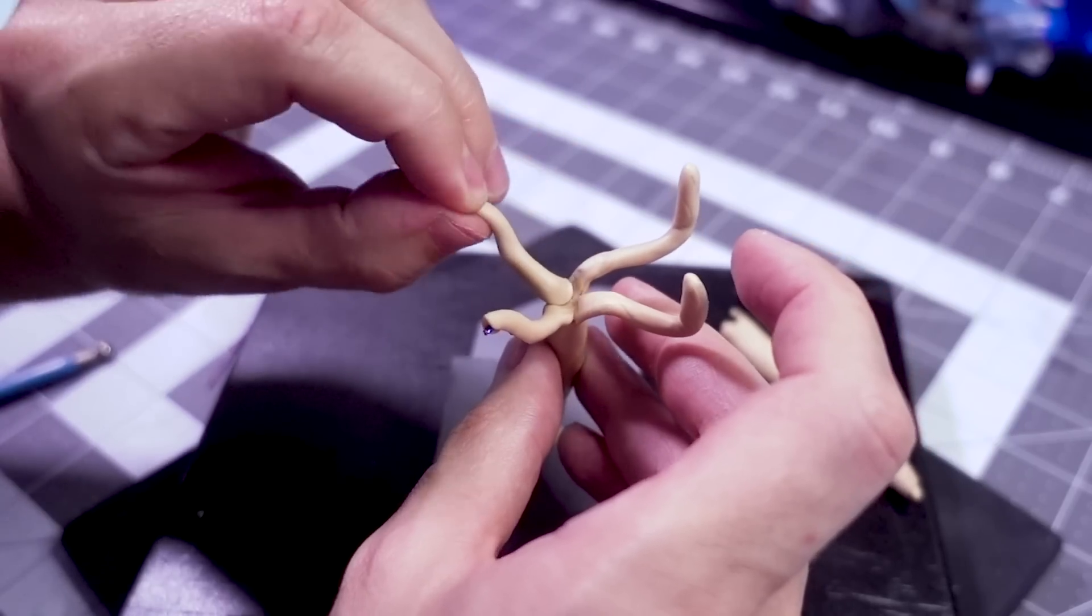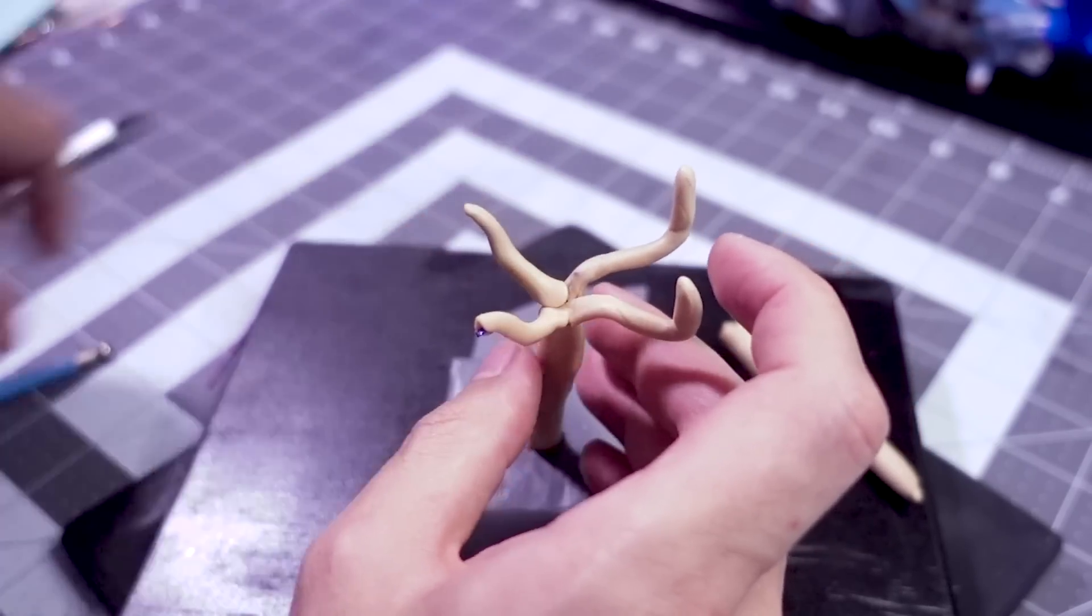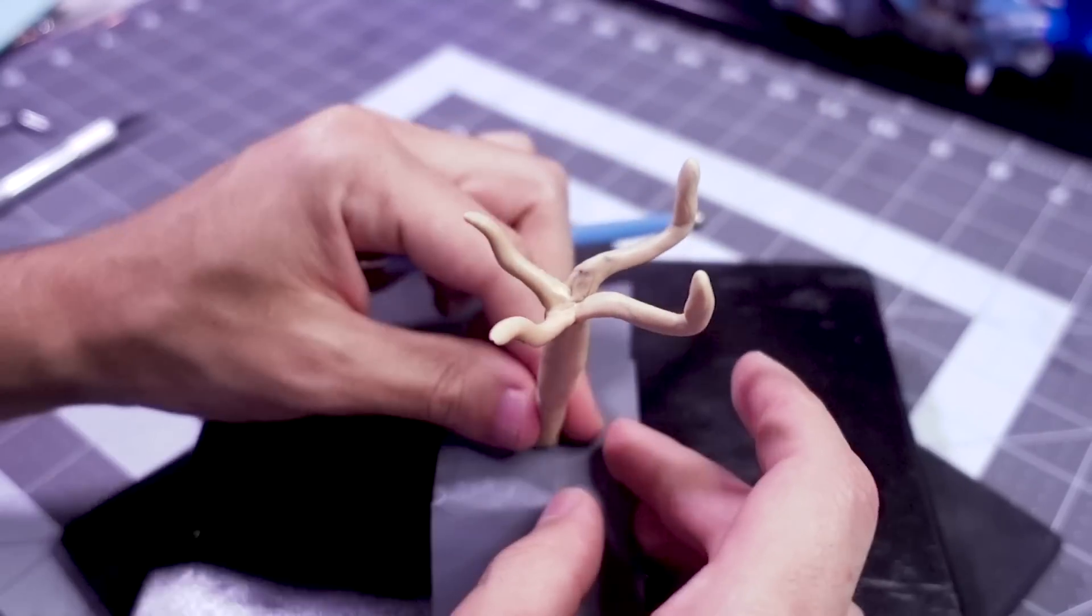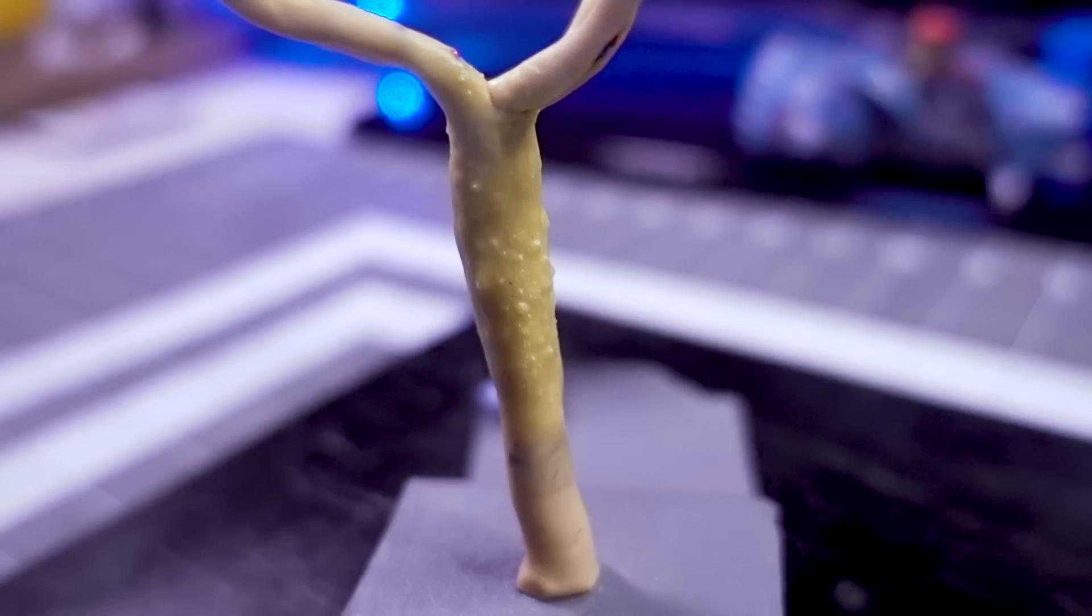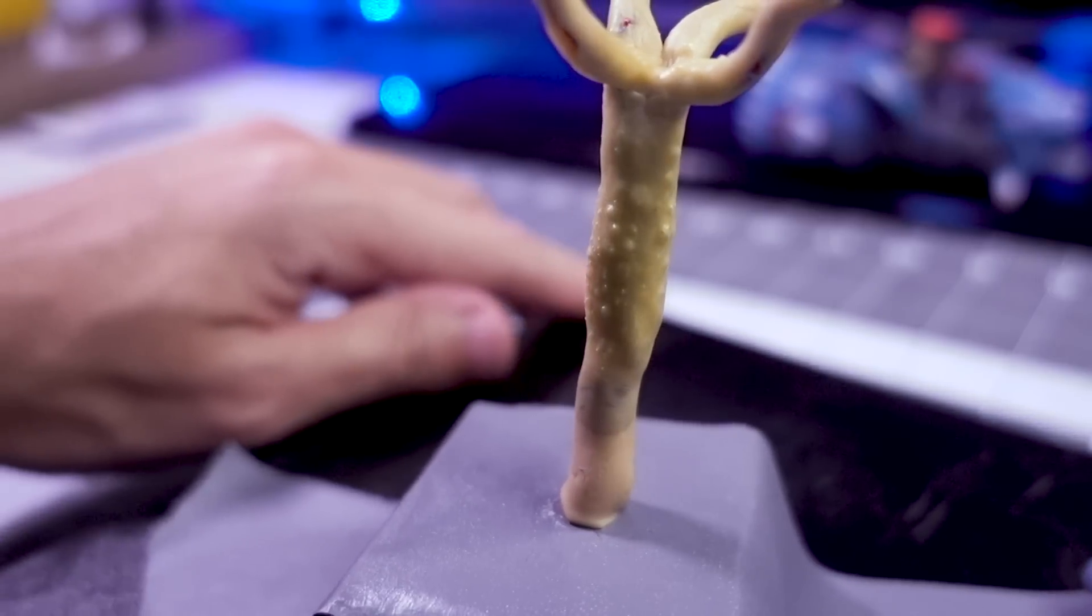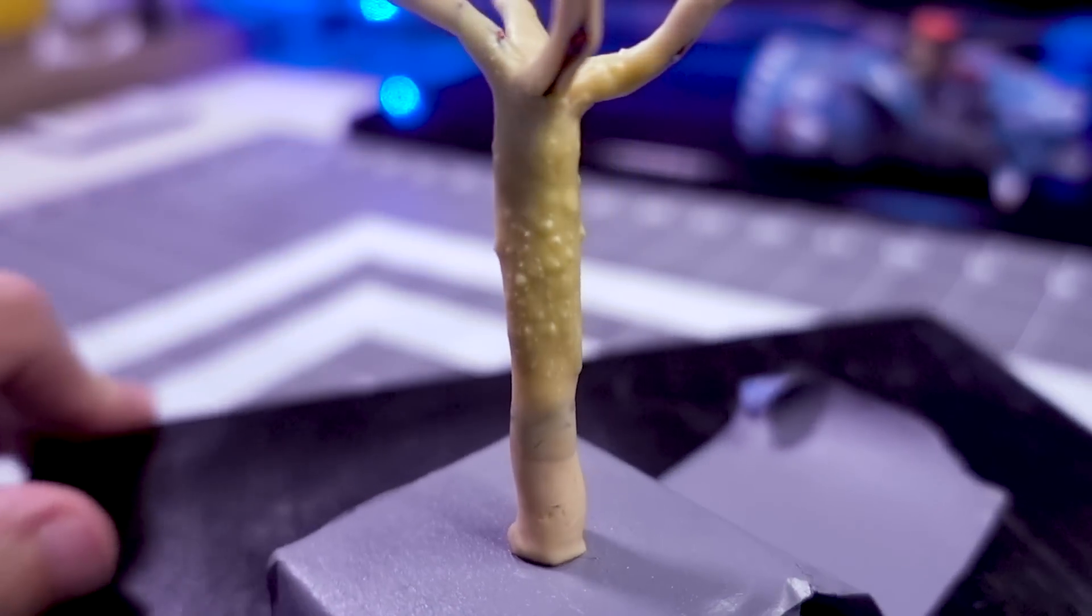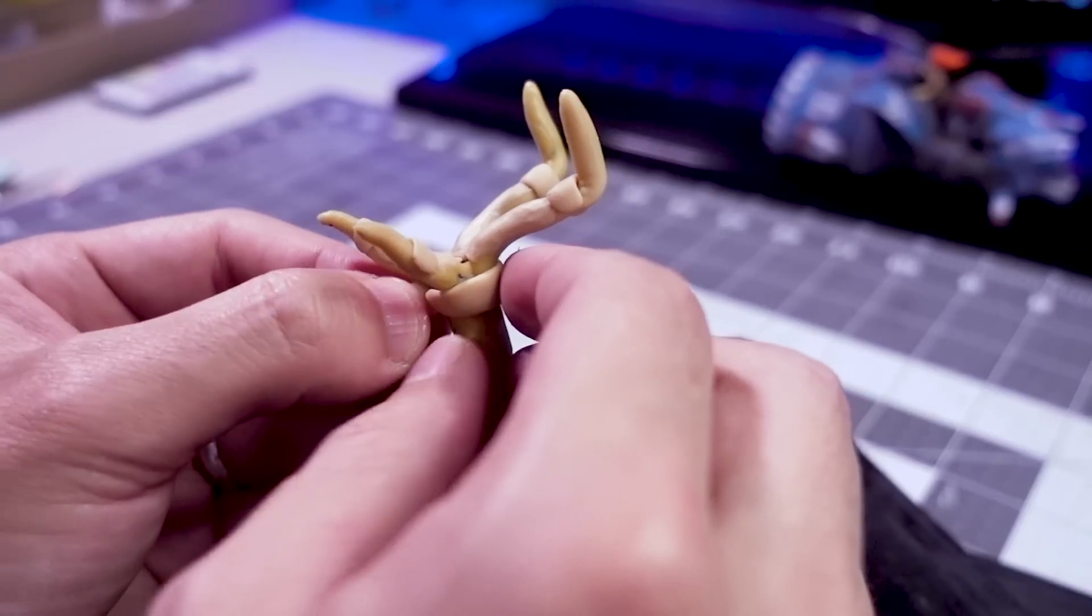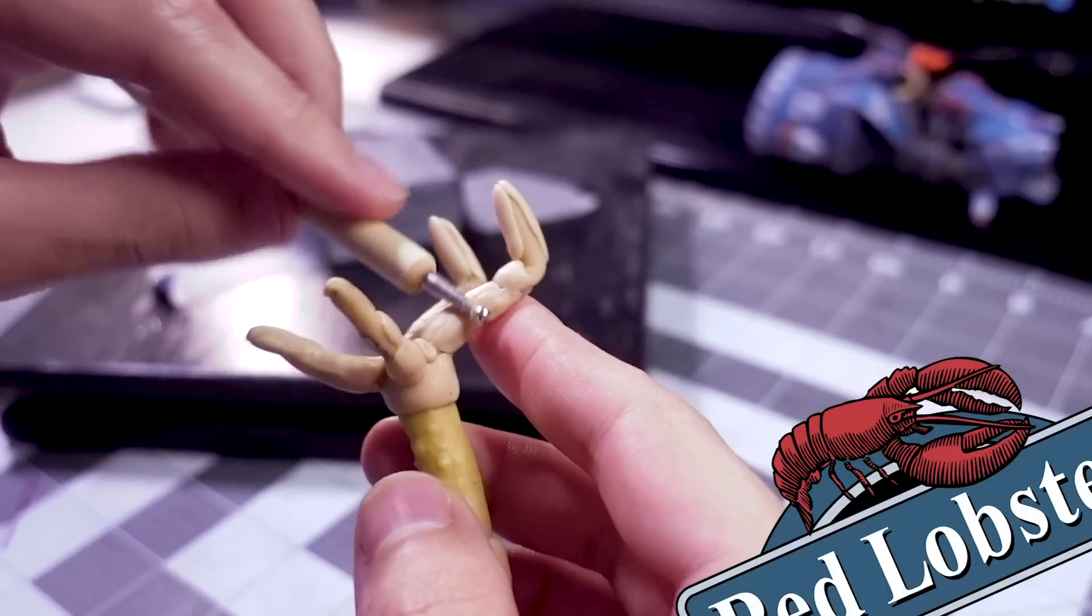Once the wire armature was built, I covered each segment in a thin layer of polymer clay, and baked not in the oven, but using my heat gun. And this is where things got interesting, because I discovered that by overheating the clay, tiny bubbles formed and hardened, leading to a bumpy texture not unlike the protrusions found on crabs and lobsters.